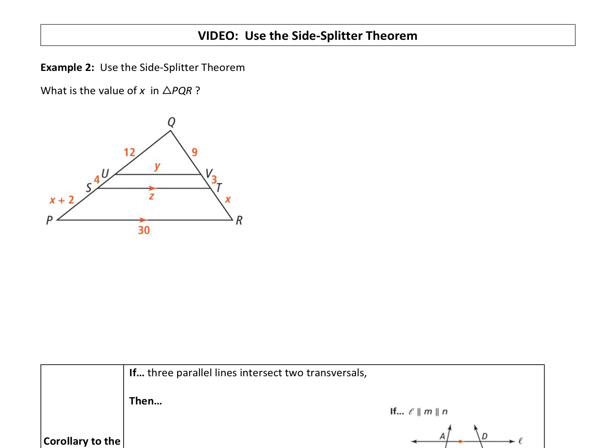So the key is this ST right here is parallel to PR. So since ST is parallel to PR, we can use the side splitter theorem. So what happens is each side got split. So here is one split and here's the other one. So we're going to focus on those two segments that got split by segment ST. And then on the other side, this TR and QT, we just split this whole side into those two segments.